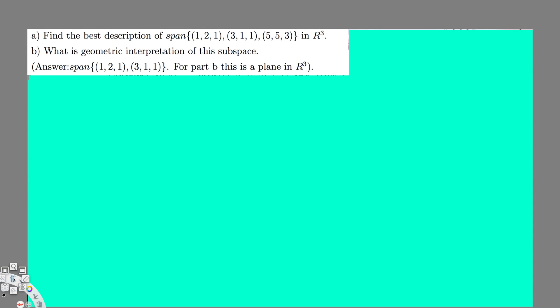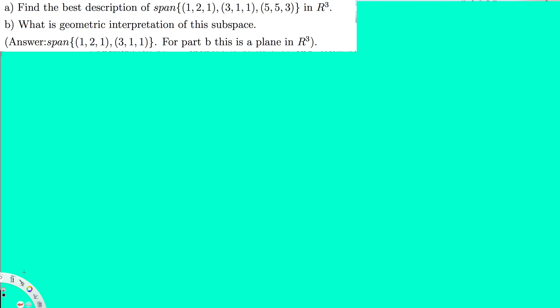Let's do this problem. The question is asking for the best description of the span of vectors 1 2 1, 3 1 1, and 5 5 3. To do this kind of question, we have to perform Gauss-Jordan elimination to check whether those three vectors are linearly independent.